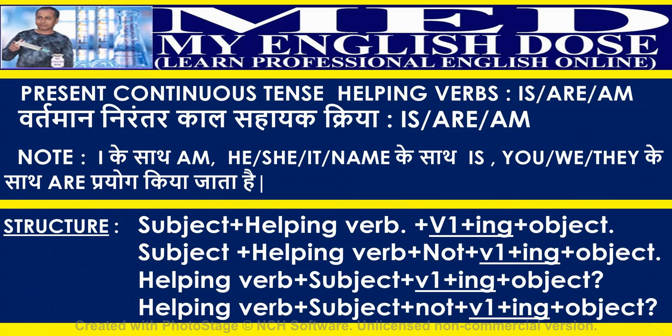Present continuous tense helping verbs are is, are, and am. Use 'am' with I. Use 'is' with he, she, it, and a name. Use 'are' with you, we, and they.